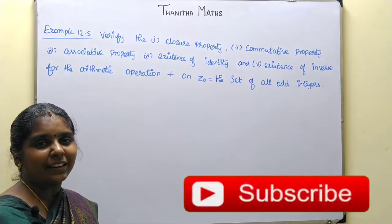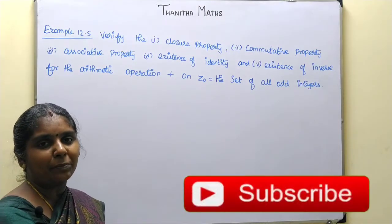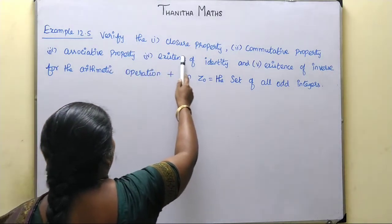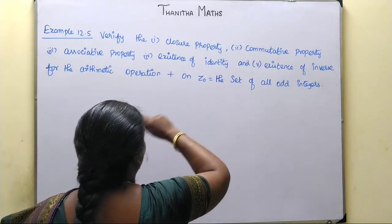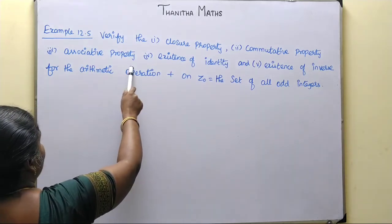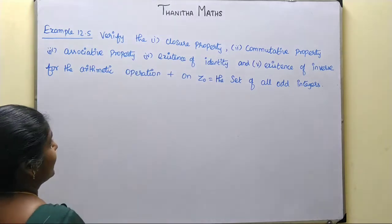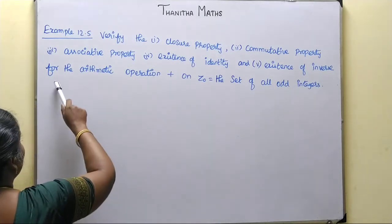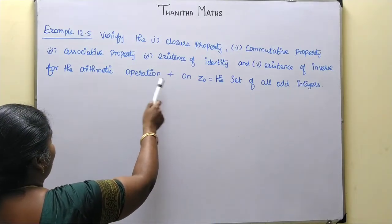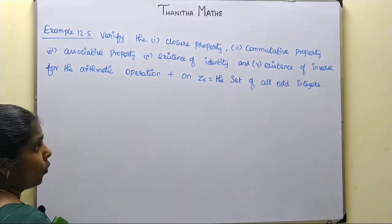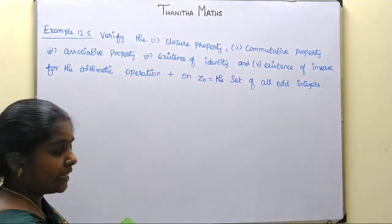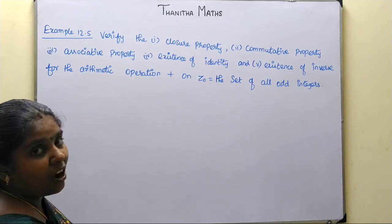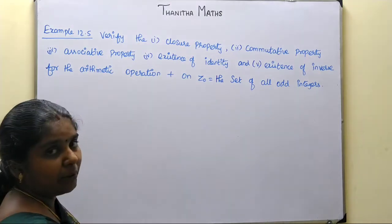Welcome students. I am going to talk about Example 12.5: verify the closure property, commutative property, associative property, existence of identity, and existence of inverse for the arithmetic operation addition on ZO — the set of all odd integers. So, all properties with respect to addition in the odd integer set we will check.